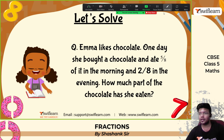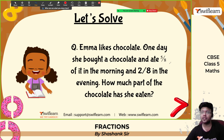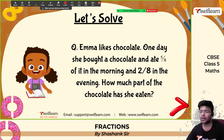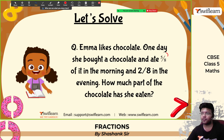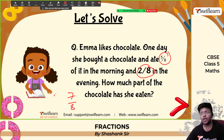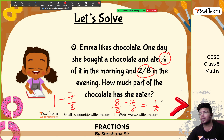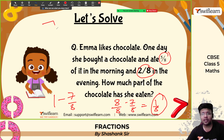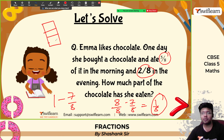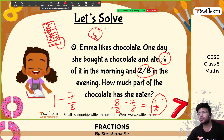Emma likes chocolate. One day she brought a chocolate and ate five-eighths of it in the morning and two-eighths in the evening. How much of the chocolate was eaten? Adding: 5 by 8 plus 2 by 8 is 7 by 8. So 7 by 8 of the chocolate was eaten. The remaining part is 1 minus 7 by 8, which is 8 by 8 minus 7 by 8 = 1 by 8. One-eighth of the chocolate is left.